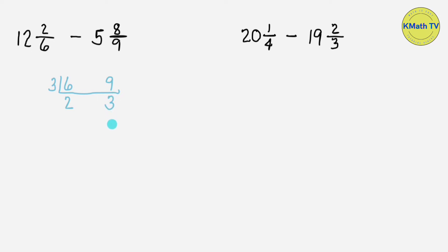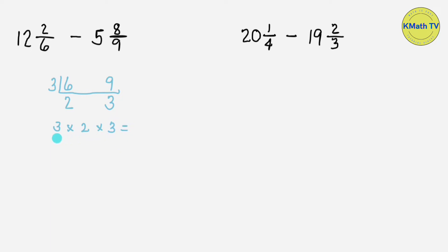The quotients 2 and 3 are both prime numbers, so they don't have any other common factor aside from 1, so we will not divide anymore. To find the LCM, we multiply the prime divisor and the quotients: 3 times 2 times 3. 3 times 2 equals 6, and 6 times 3 equals 18. The LCM of 6 and 9 is 18, and we will use this as the denominator.